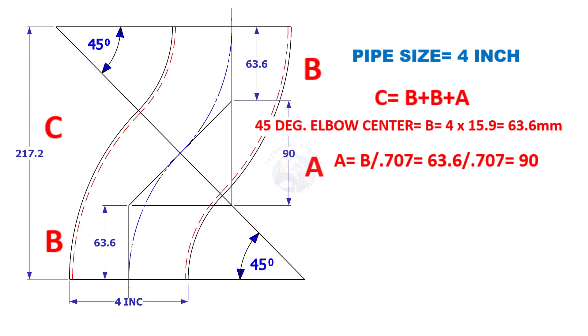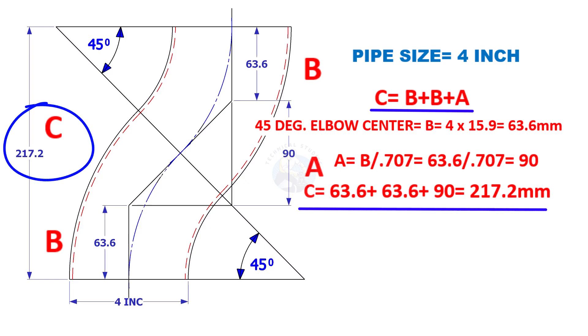The distance of A is B divided by 0.707, which is 90 millimeters. Now, B plus B plus A is 217.2 millimeters.